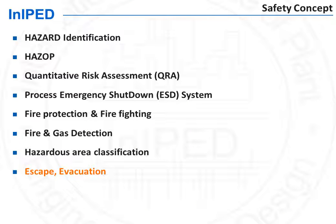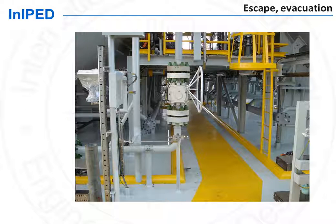We shall not forget to mention, among the various aspects of plant safety, the need to provide escape and evacuation for personnel. This is particularly critical offshore due to the limited space and also the fact that personnel is trapped on the facility and needs evacuation means such as lifeboats to escape in an emergency.